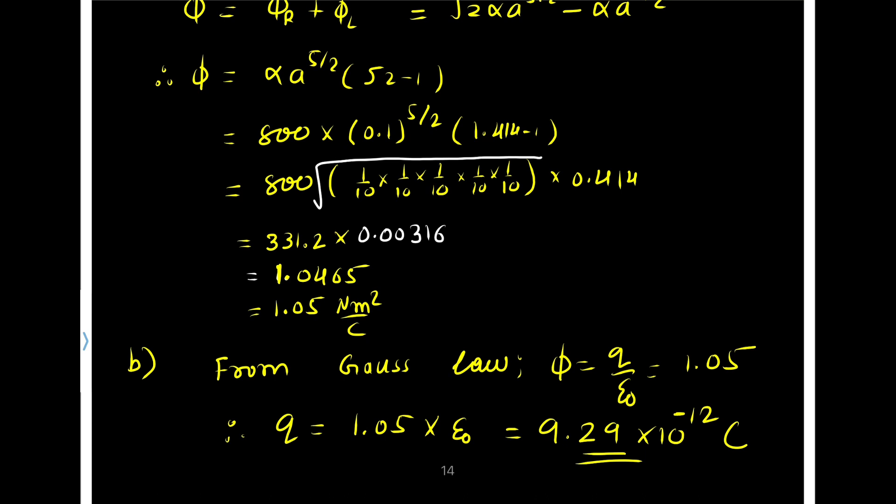In part B, we need to find the charge in the cube. From Gauss's law, flux = Q/ε₀. So Q = flux times ε₀. Putting the value of ε₀ = 8.854 × 10^(-12), we get Q = 9.29 × 10^(-12) coulomb.